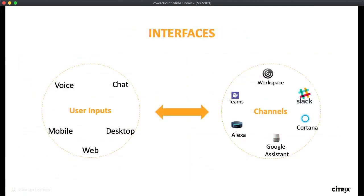The second part is the interfaces. In the concept of Citrix and choice, our customers would expect to be able to consume the assistant in any form or shape. Obviously you should be able to talk to it or interact with it in text format. But also, in all the various places where you get work done — workspace, Teams, Slack — you should be able to have the virtual assistant capabilities embedded into those applications.